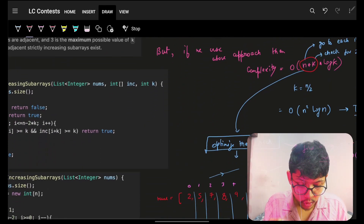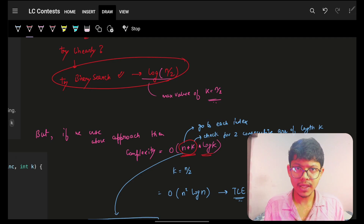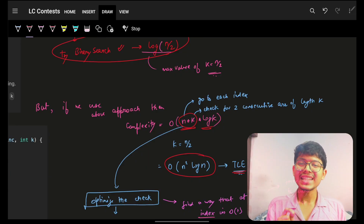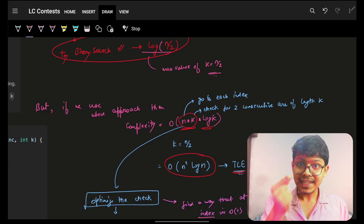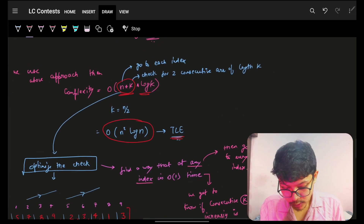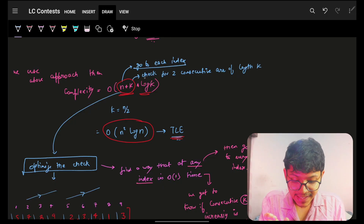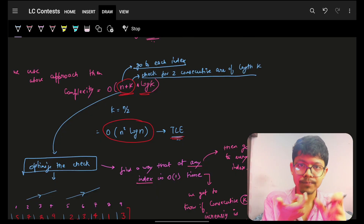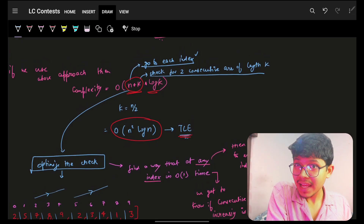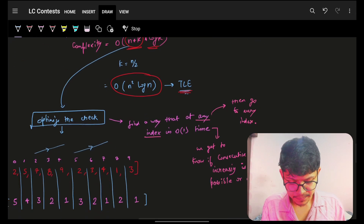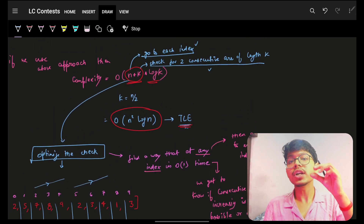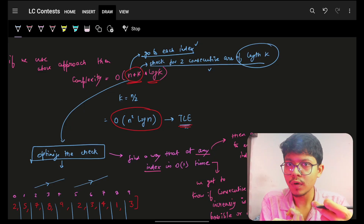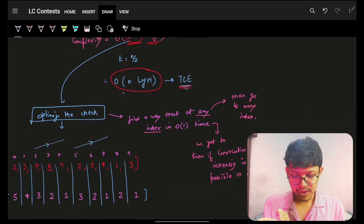That gives overall complexity O(n·k·log k). Since k can be up to n/2, this becomes O(n² log n), which will give TLE because n can be up to 10^5. To fix this, we need to check whether a given k is valid in O(1) per index, so that the overall complexity becomes O(n log n).